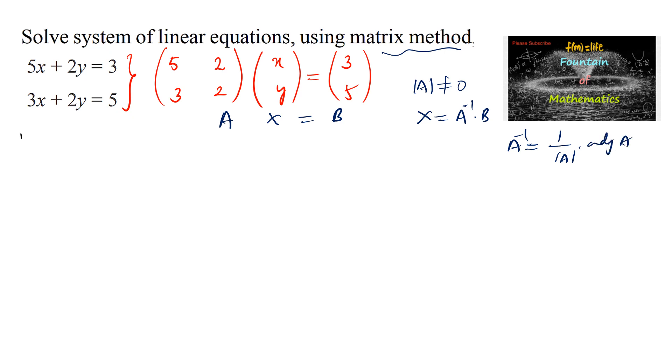Let's find the determinant of the given matrix. Determinant of 5, 2, 3, 2 which is equal to 5 into 2, 10 minus 3 into 2 is 6. So 10 minus 6 is 4 which is not equal to 0.